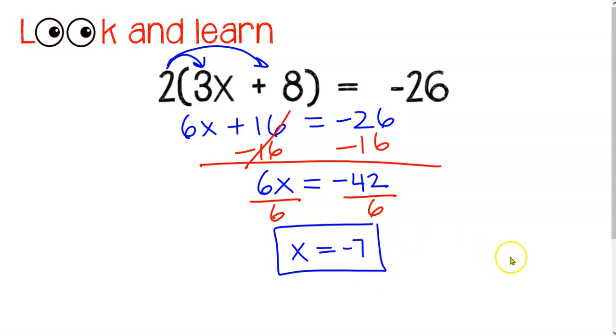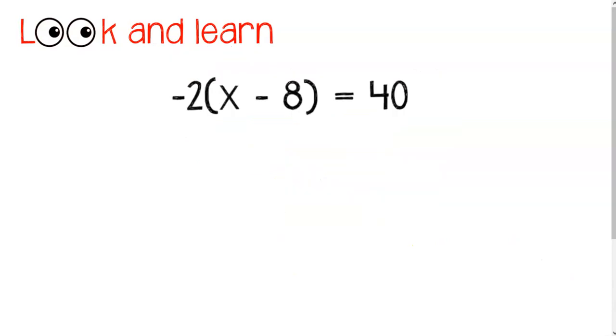Let's take a look at another example just like that. This time we're going to distribute a negative value. Negative 2 times x is negative 2x. Now, be careful here. Negative 2 times a minus 8, or a negative 8, is positive 16.